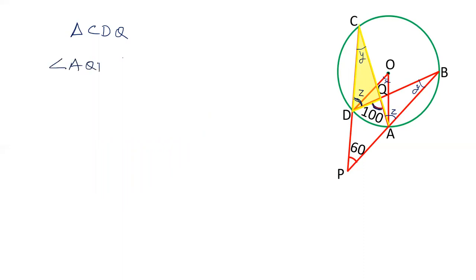Angle AQD is exterior to triangle CQD and it is equal to Y plus Z by exterior angle property. AQD is 100. So 100 equals Y plus Z. This is the first triangle we have taken. CQD is extended to A. This is exterior angle and equals Y plus Z.